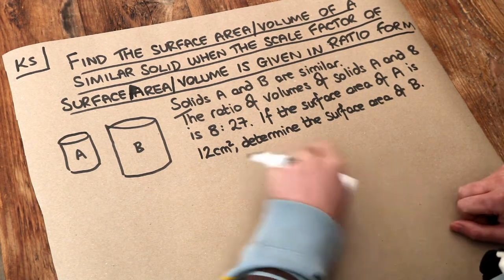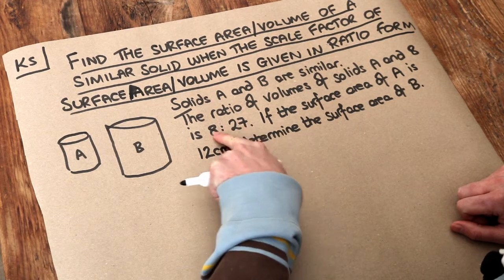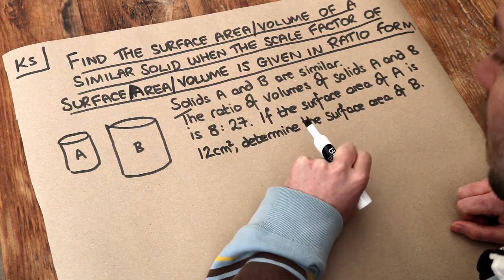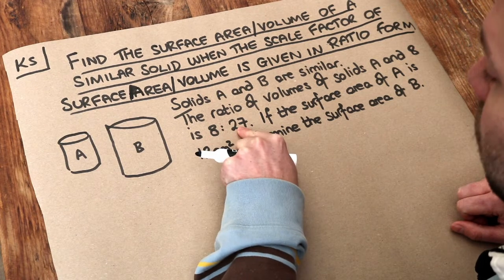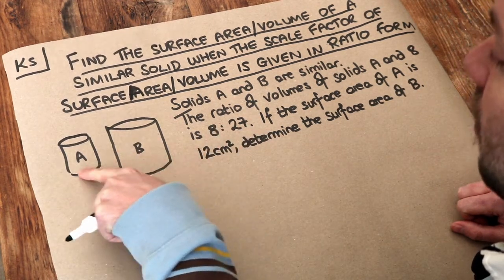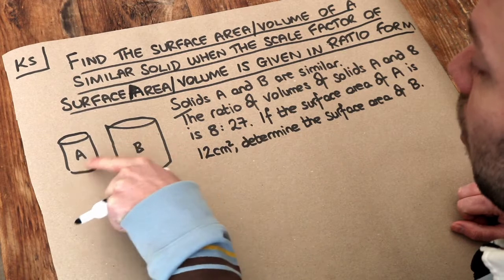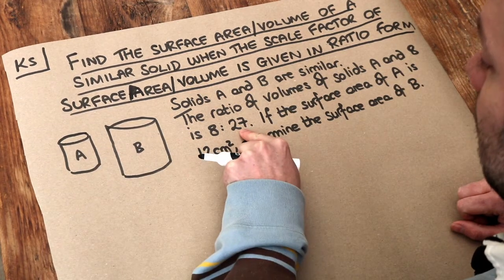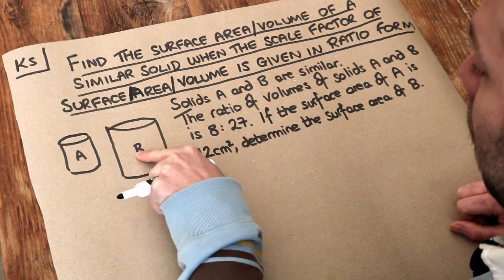Now the only subtlety here is how we deal with this ratio of volumes, 8 to 27. But we could just treat these parts in the ratio of 8 and 27 as the actual volumes of A and B, because 8 parts of volume in A equals 27 parts of volume in B.